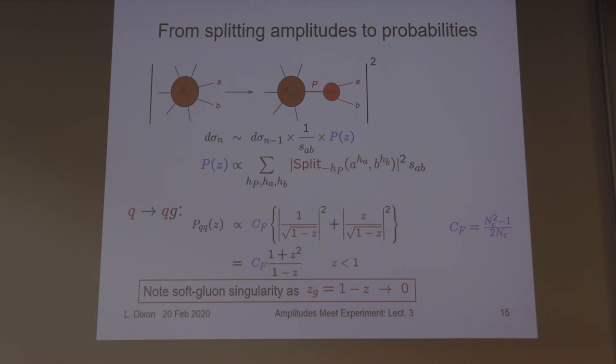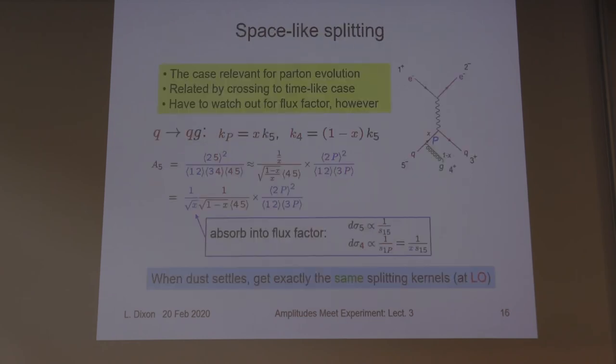So you can see we can just read off and construct from these simple five-point amplitudes the Altarelli-Parisi splitting factors.